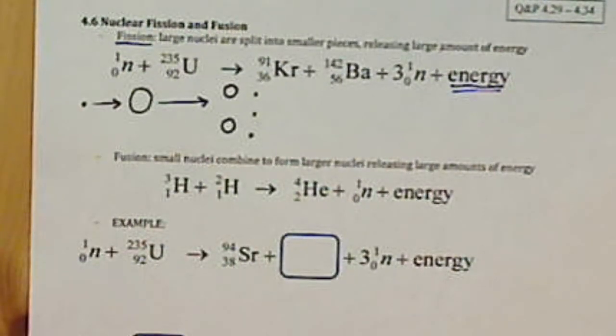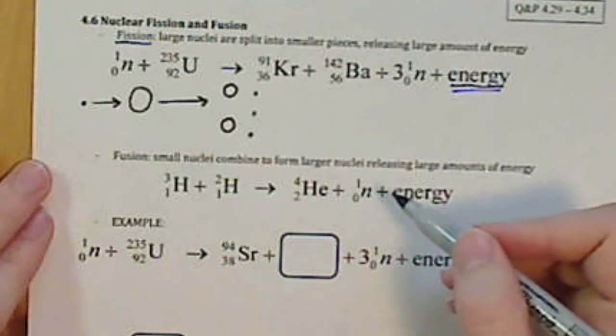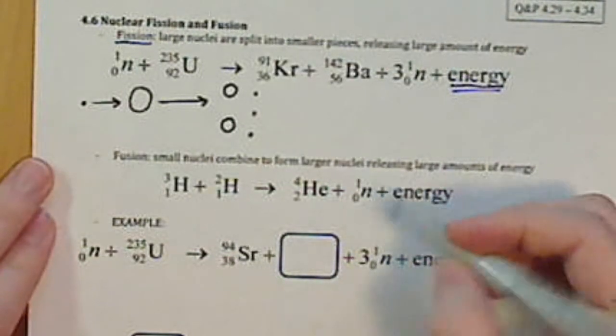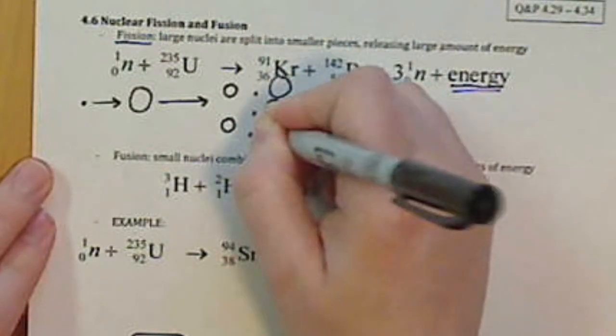Now, this is all happening in a reactor. So these neutrons are now able to fly into another large nuclei, right? So large nuclei, large nuclei, large nuclei.